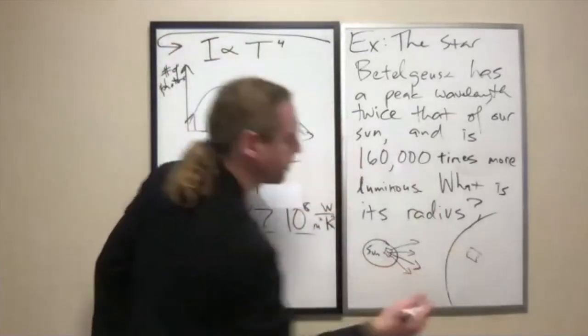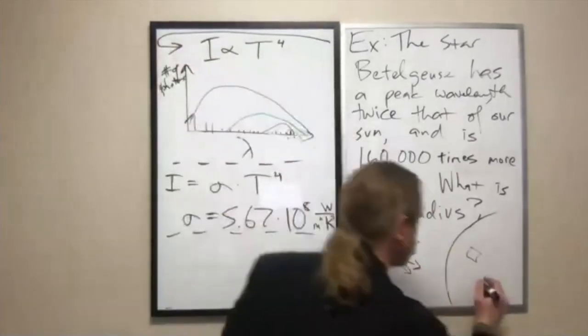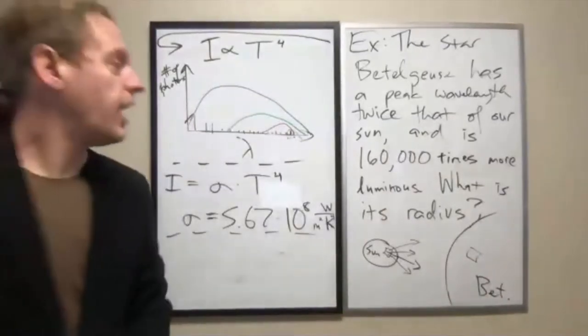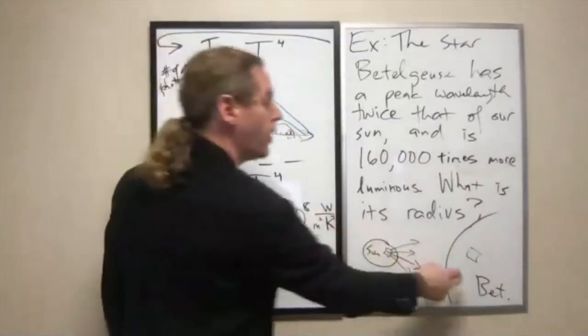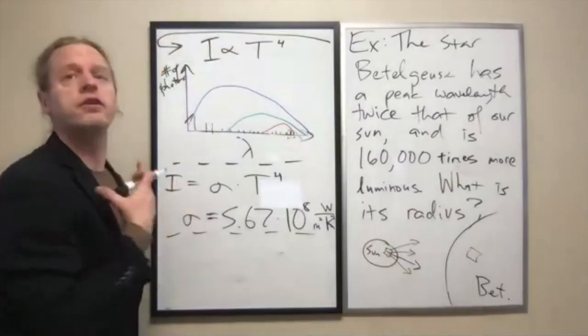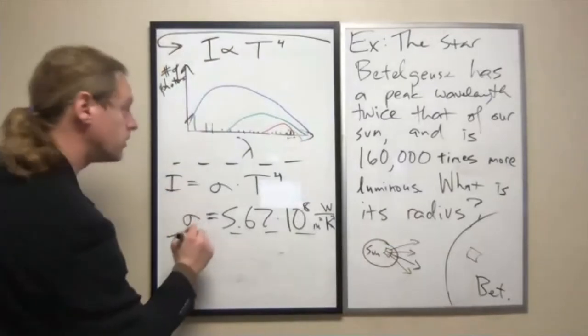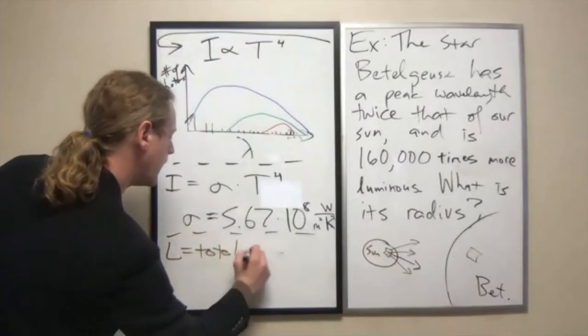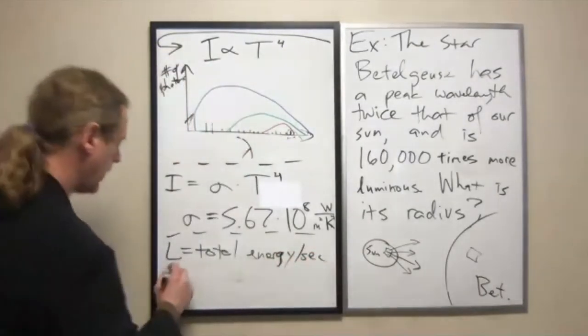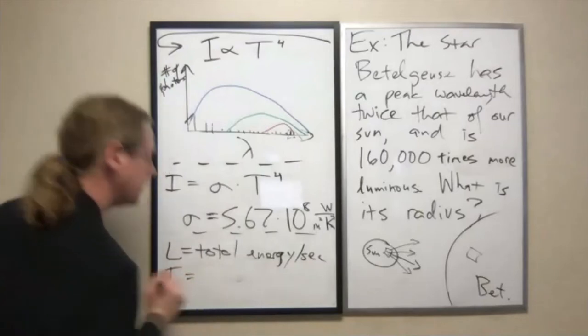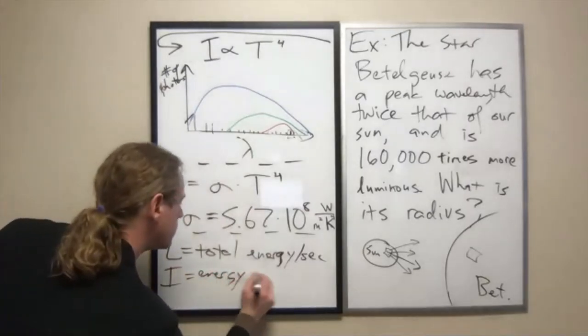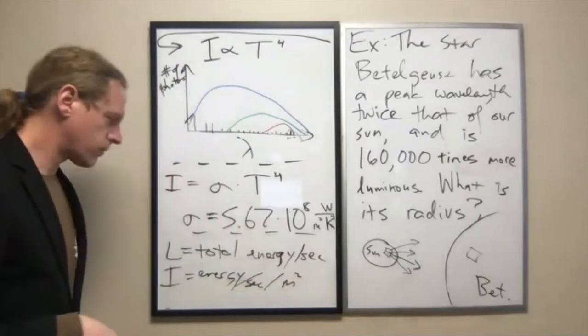If our sun is outputting, let's say, four photons per square meter, and if this is Betelgeuse, how many photons would Betelgeuse be emitting per square meter? And if you know that, how can you then calculate the total amount of light Betelgeuse is giving out? Let's talk about directly what's the relationship between luminosity and intensity.